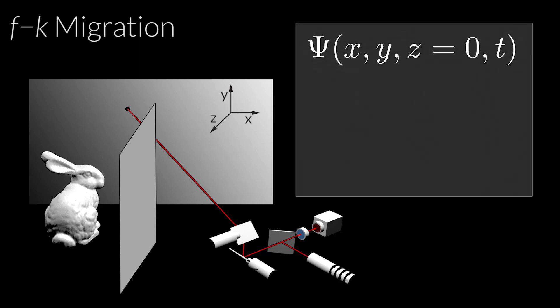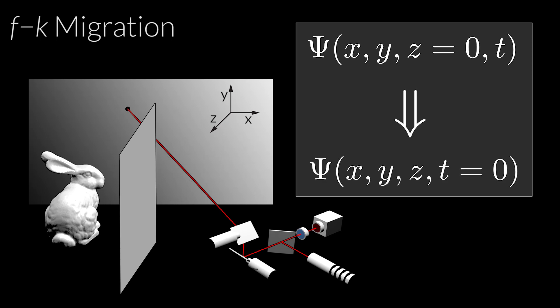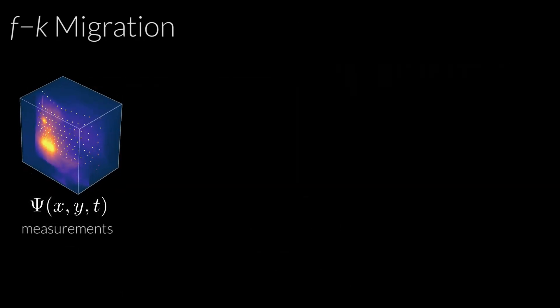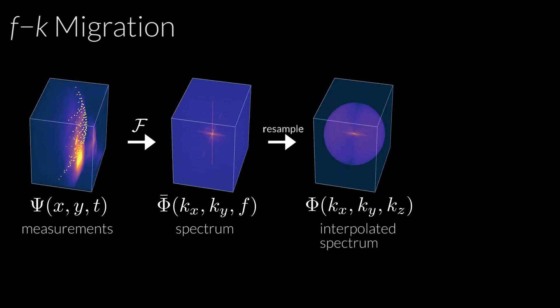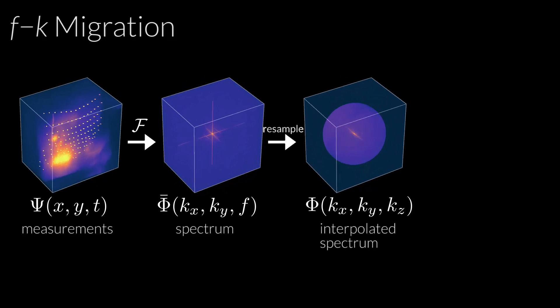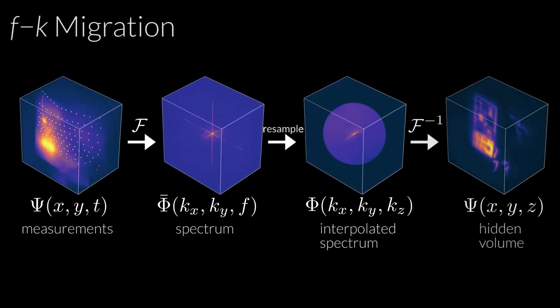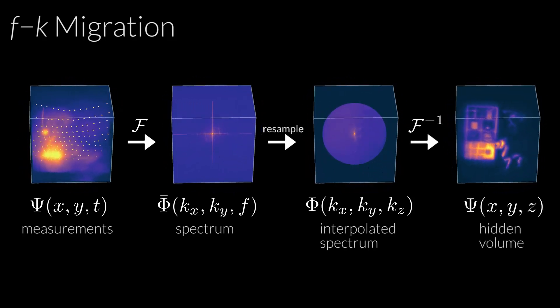Rather than modeling the two-way propagation of light from the wall to the object and back, we can think of the light as being emitted by the hidden object at time zero and traveling at half the speed of light to the wall. The captured measurements thus contain the intensity of a wave field arriving at the wall over time, and reconstructing the geometry of the hidden volume corresponds to finding the value of this wavefront at time zero. This is a boundary value problem which requires us to migrate the field from one boundary condition at the wall to another in time. FK migration solves this problem in three simple steps: starting with the measurements at the wall, we take the Fourier transform to calculate the spectrum; we interpolate the spectrum based on constraints from the wave equation as detailed in the paper; and applying the inverse Fourier transform returns the hidden volume.